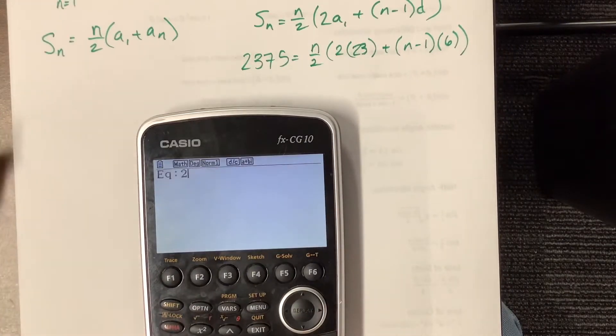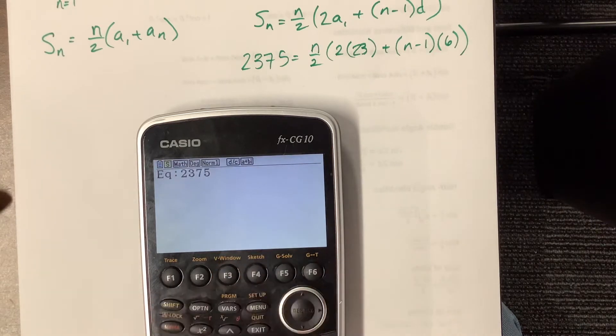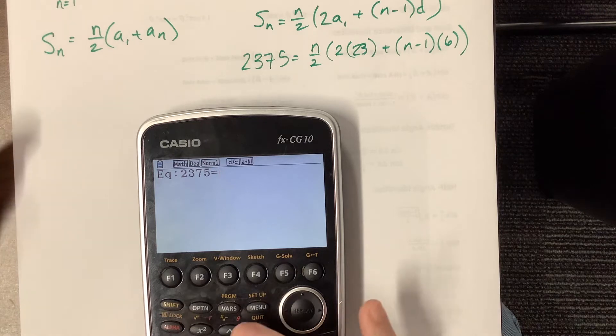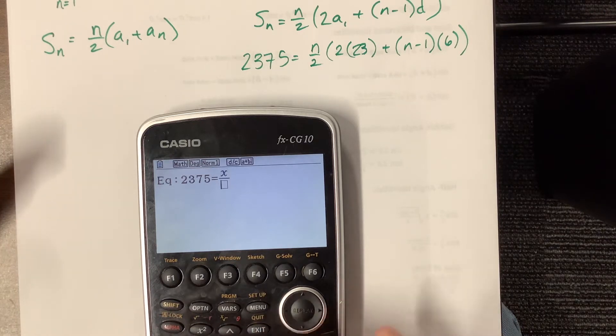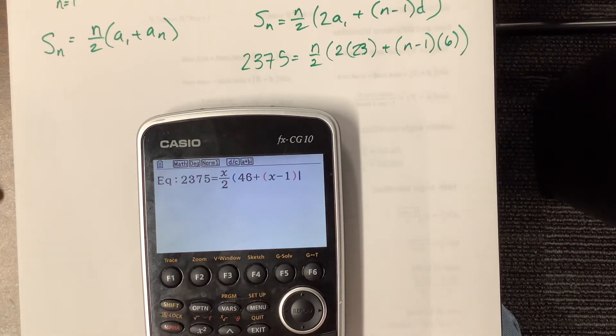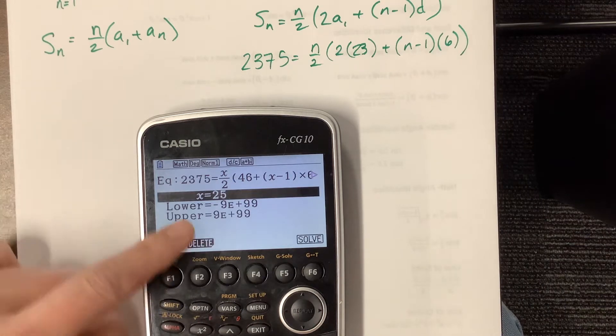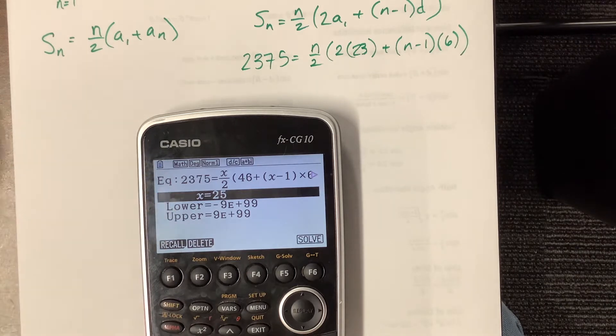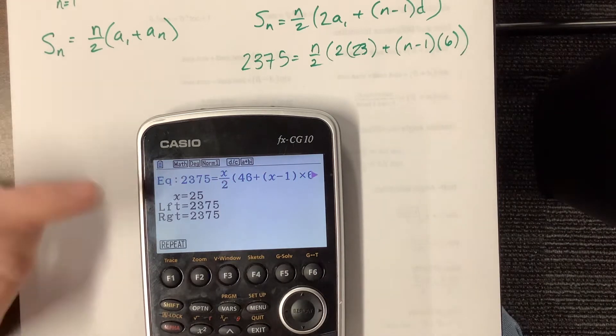And what was my equation? It was 2375 equals, instead of n I'm going to use x, but x over 2 times, well, 46 plus, close parenthesis, x minus 1, I was just too lazy to type in 2 times 23, and it was easier for me to multiply, times 6, close the parentheses, and now it needs an interval to look in. We'll just let it solve. Looky there!